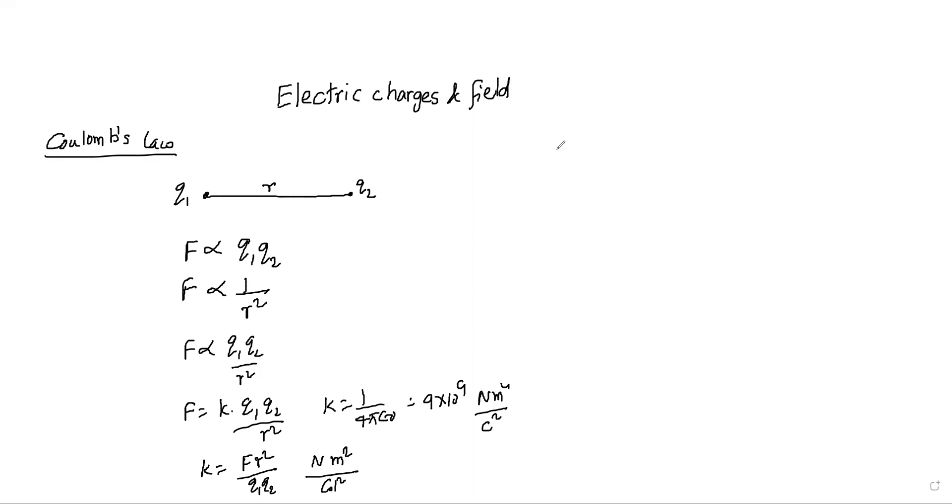Now same Coulomb's law in vector form. How to express Coulomb's law in vector form. Let's say the charges q1 and q2 are placed at distance r.